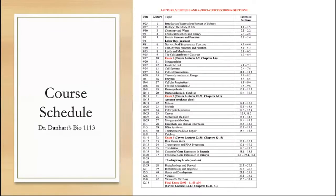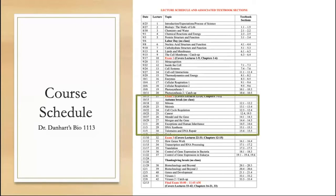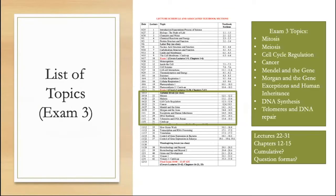This is an example of a course schedule found at the bottom of Dr. Danhart's Bio 1113 syllabus — thank you Dr. Danhart for allowing us to use it. As you can see, this is the full list of topics students are going to be learning throughout the semester, starting in August and ending in December. For our purposes today, we're going to be preparing for exam three, which covers lectures 22 to 31, chapters 12 to 15. So this is our list of topics.